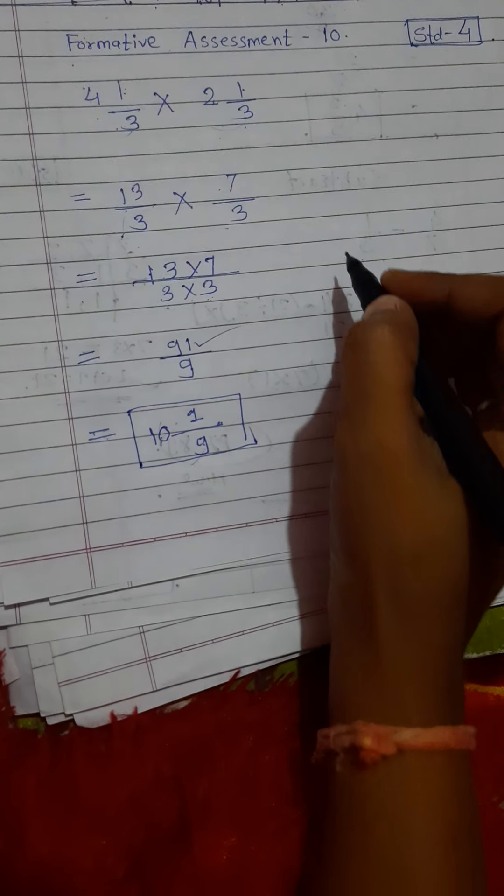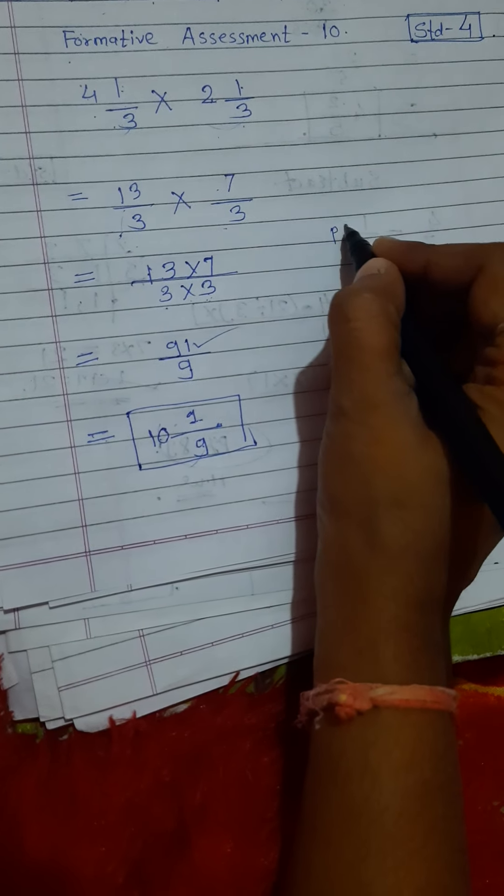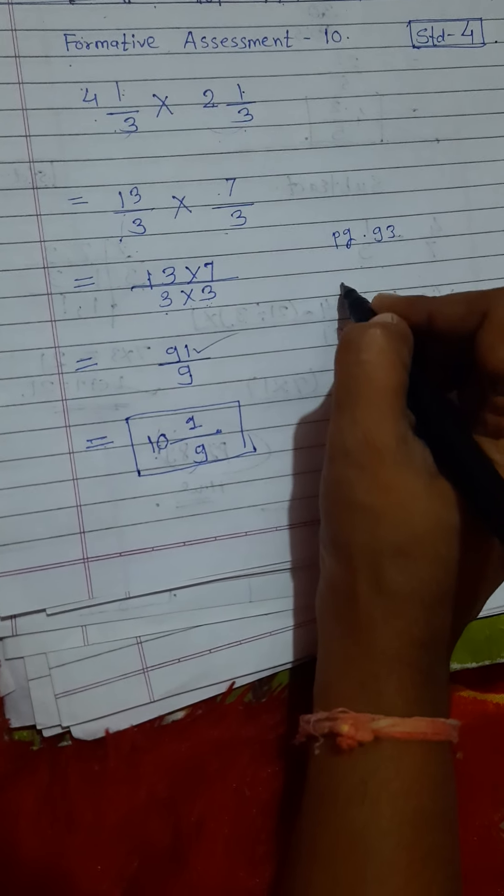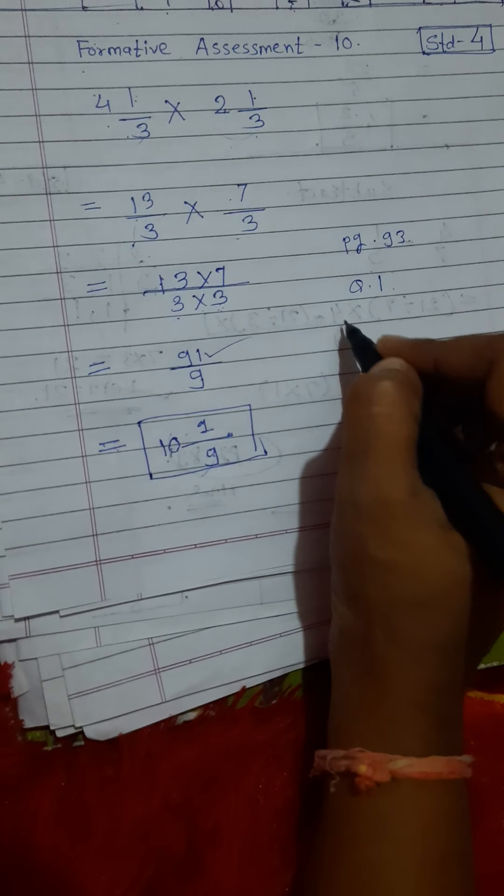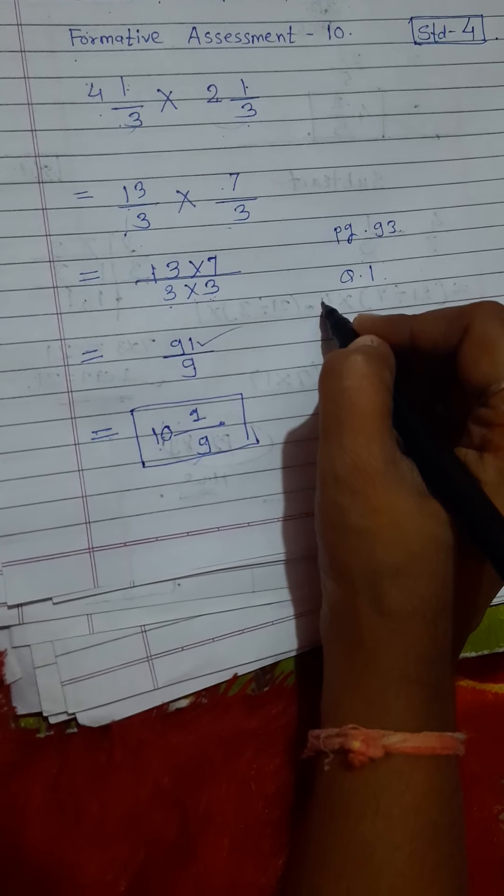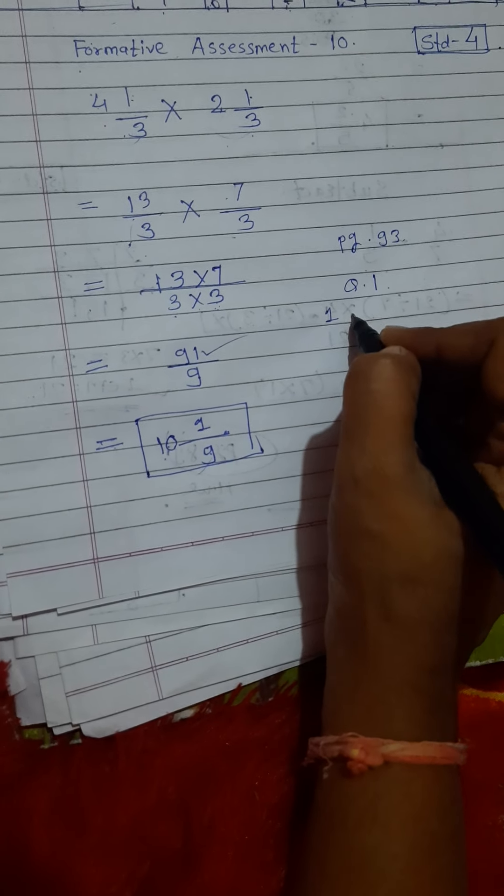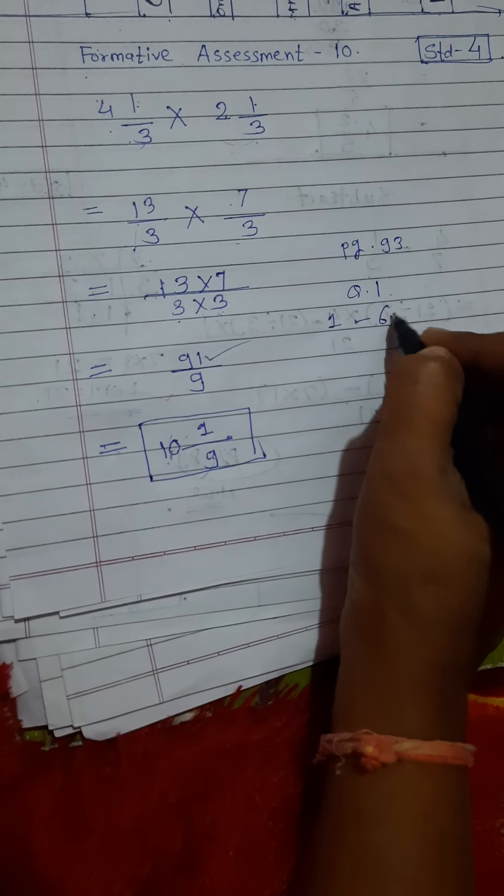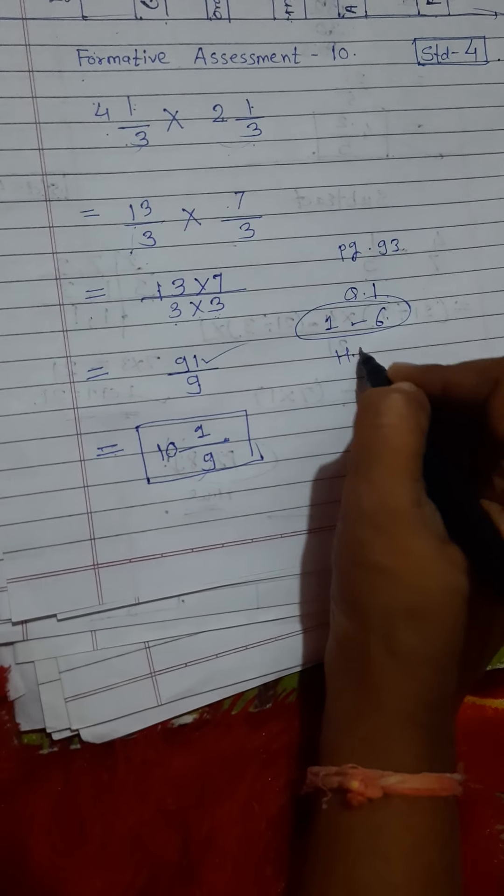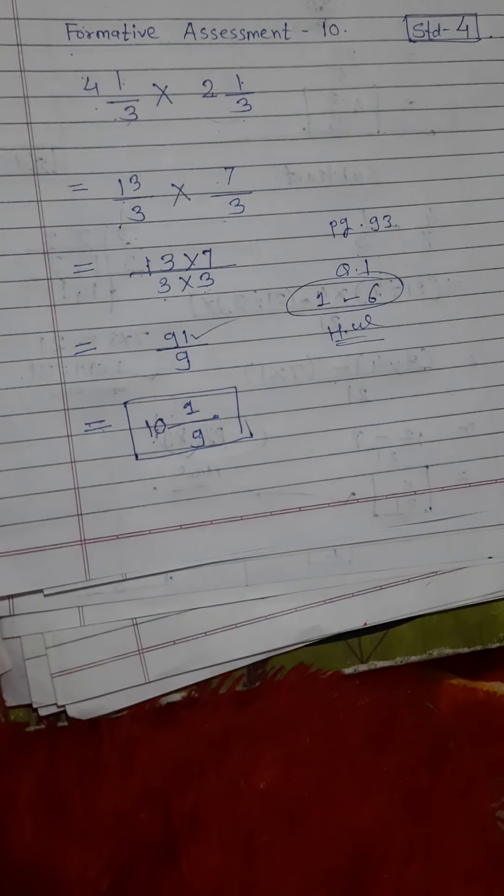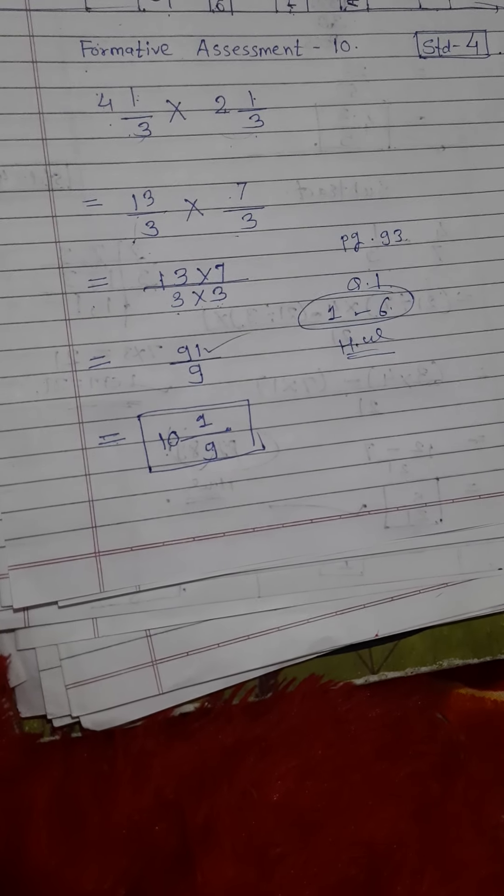In your page number 93, question number 1, in that question number 1, you have to solve questions 1 to 6 in your homework. Okay children? Thank you. I'll see you. Thank you.